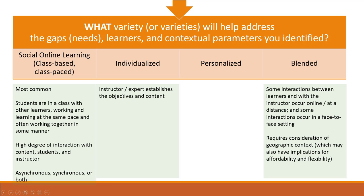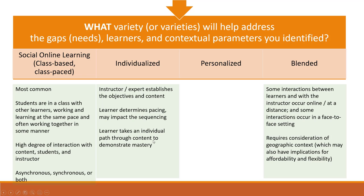Individualized learning means the instructor or some expert establishes the objectives and content, but the learner determines the pacing and may even impact the sequencing — for example, by skipping over something they test out of. Learners move through at their own pace; they're not waiting with others and they're not interacting or collaborating with other students. The focus is usually on demonstrating mastery — understanding and explaining something — which tends toward the lower-order Bloom's taxonomy levels of retention and comprehension.